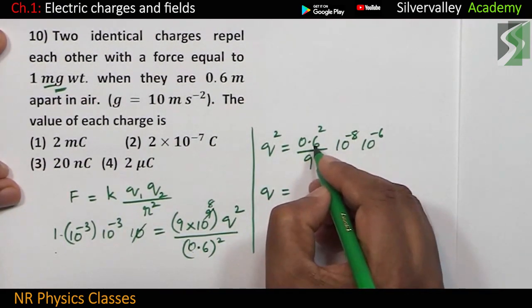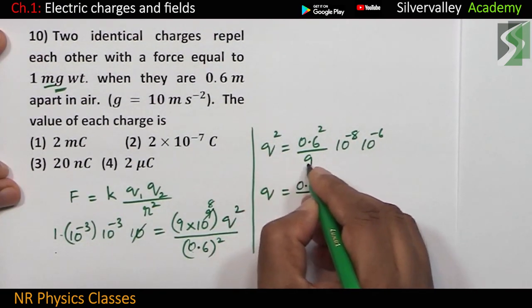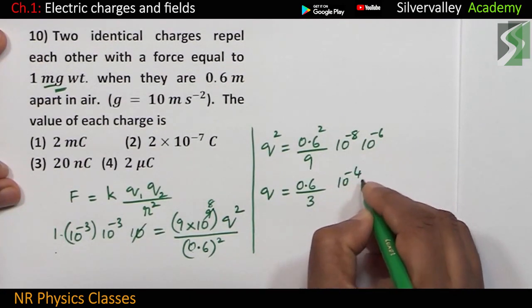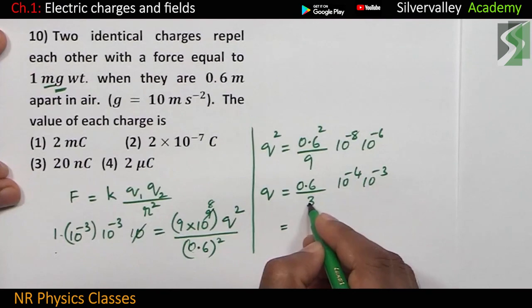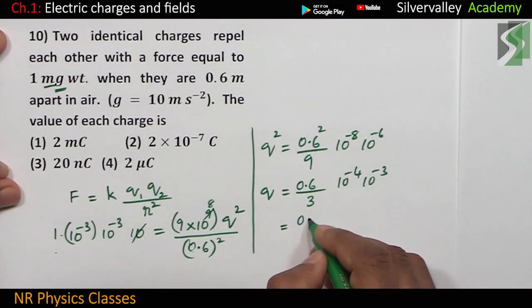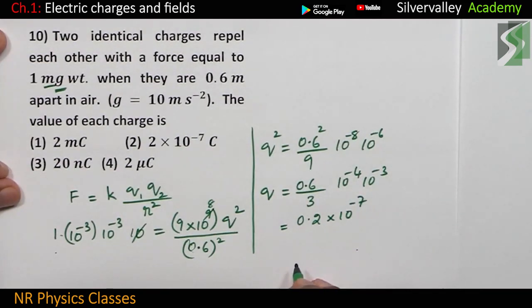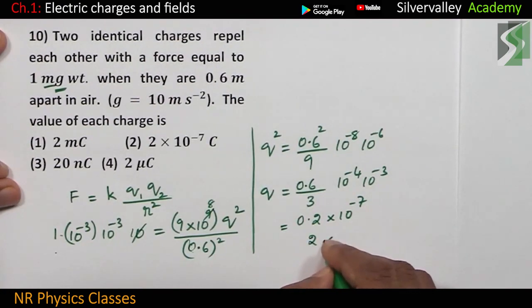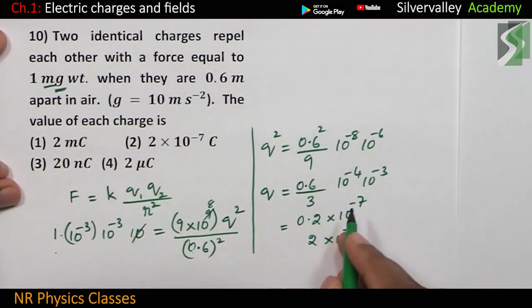So, Q equal to square root of this is 0.6. Square root of 9 is 3. 10 to the power minus 4, 10 to the power minus 3. 3, 1, 3, 2. So, 0.2, 10 to the power minus 7. 2 into 10 to the power minus 8. 20 into 10 to the power minus 9.